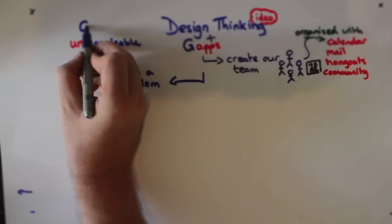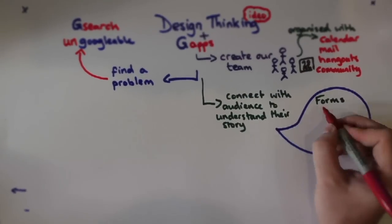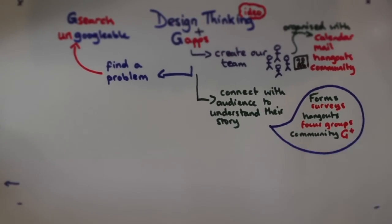Finding a problem. Now, this problem needs to be un-Googleable. So, we check with Google Search and we connect with our audience to understand their stories using Forms, Hangouts, Community to hear those stories.